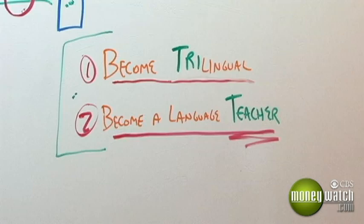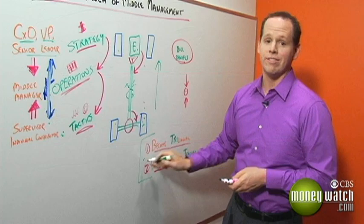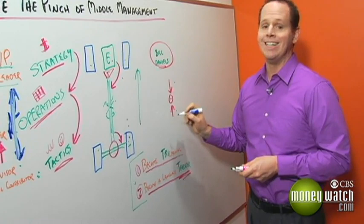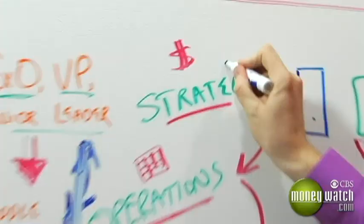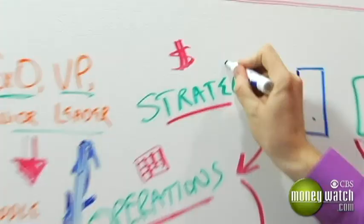Now, I'm not saying if you do these things, you're guaranteed to have an easy life. What I'm saying is if you don't do these two things as a middle manager, you're guaranteed to have a hard life. So, if you're a middle manager and you feel trapped in the middle, pressure from above, pressure from below, take the time to learn and teach three languages. The language of strategy, the language of operations, and the language of tactics. It's the only way I know to survive the pinch of middle management.